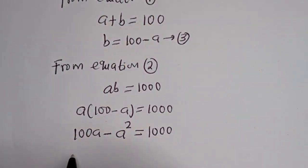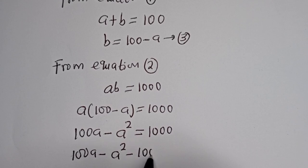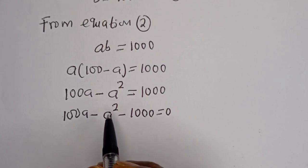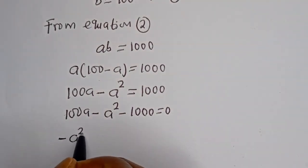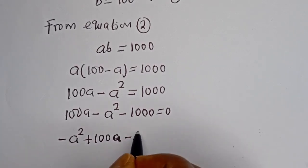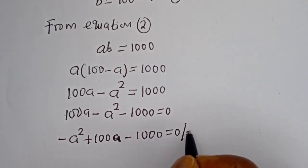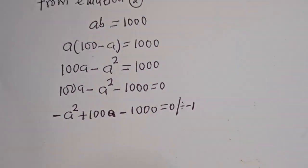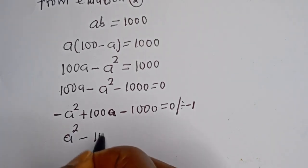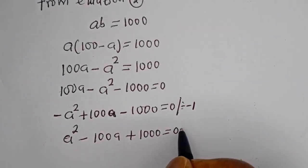Then this is 100A minus A squared minus 1,000 is equal to 0. Now let's divide all through by minus 1. This becomes A squared minus 100A plus 1,000 is equal to 0. This is a quadratic equation.